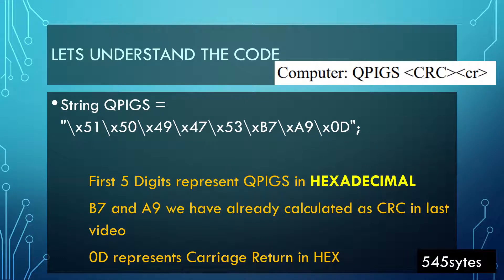We computed B7A9 in the last video, and the CRC is followed by 0D — the carriage return. We need to send hexadecimal values to the inverter. I don't know exactly why — maybe that's a protocol restriction — but I've found that we can't send binary, decimal, or ASCII characters. I won't go into details about binary, decimal, and ASCII; most of you already know, and if not, you can Google how this conversion takes place.